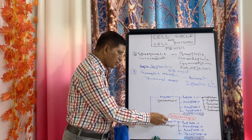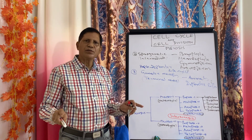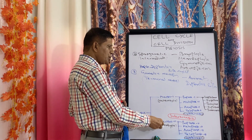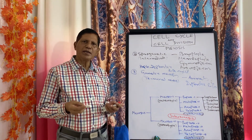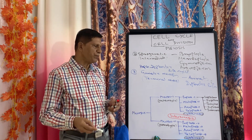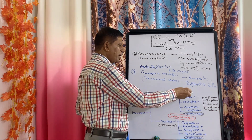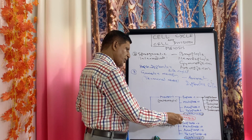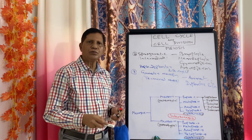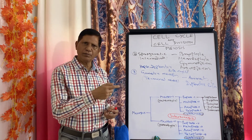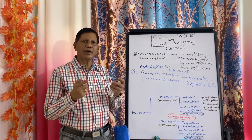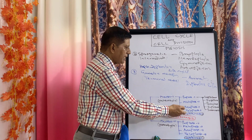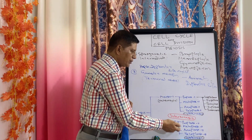In both Meiosis 1 and Meiosis 2, the four stages are present: prophase, metaphase, anaphase, and telophase. To distinguish them, Meiosis 1 stages are labeled prophase 1, metaphase 1, anaphase 1, and telophase 1; and in Meiosis 2 they are labeled 2. After Meiosis 1 there is cytokinesis, and after Meiosis 2 there is also cytokinesis. In between Meiosis 1 and Meiosis 2 there is interkinesis. Interkinesis is just like interphase — there will be some synthesis of proteins, RNA, and amino acids — but DNA replication will not take place.